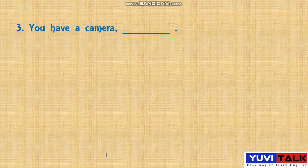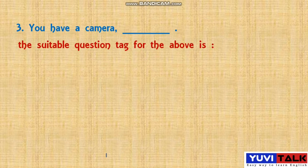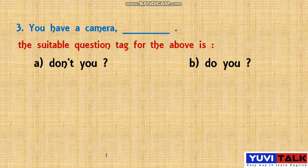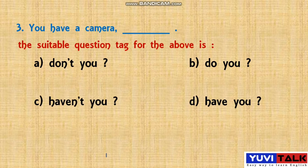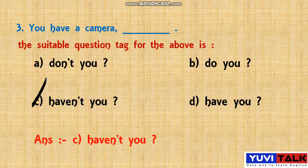Next question: 'You have a camera, dash it.' Find the suitable question tag. The sentence is positive, so it takes a negative question tag. Option C, 'haven't you,' is the right answer.